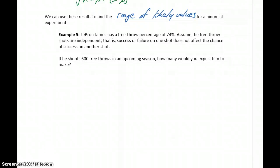In our last example, LeBron James has a free throw percentage of 74%. Assume the free throw shots are independent, which is probably a bit of an assumption since whether or not you make one free throw probably has some effect on whether you make or miss the second one. But we'll go ahead and make this assumption that shots are independent, so success or failure on one shot doesn't affect the chance of success on another shot. If he shoots 600 free throws in an upcoming season, how many would you expect him to make?